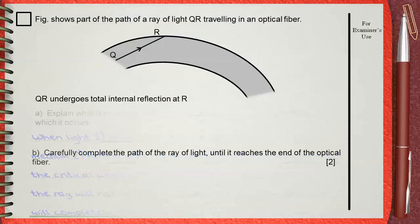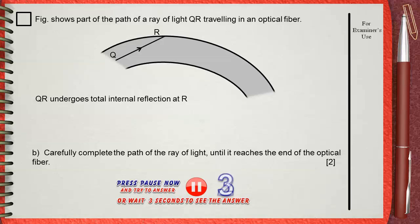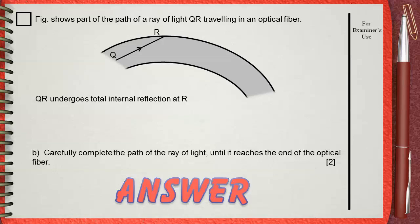Question B: carefully complete the path of the ray of light until it reaches the end of the optical fiber. This is an easy reflection question. Just draw the normal, measure the angle of incidence, and make an angle of reflection.